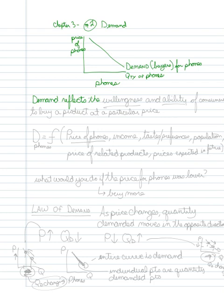And what the demand reflects here, it reflects or shows us both the willingness and ability of consumers to buy the product at a particular price. It basically tells us how much are they going to buy given the different prices that are out there.